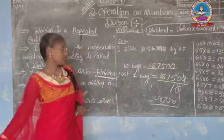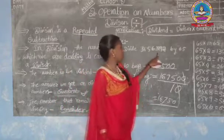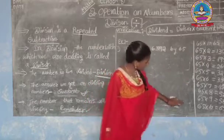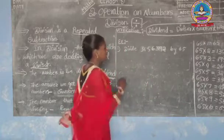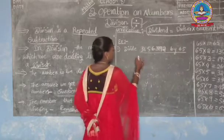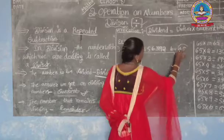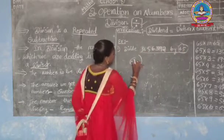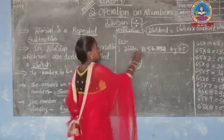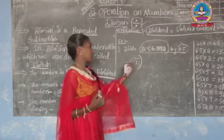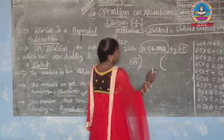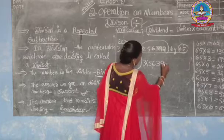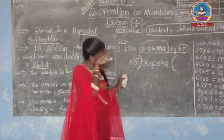Now let us see how to divide a given number by a two-digit number. The divisor is 65 — write this divisor on the left side. The dividend is 3,456,392 — write this number in the middle of the two brackets. Here we write the quotient.